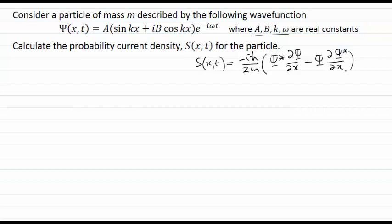So we're going to need to worry about the wave function, its complex conjugate, and the derivatives of both of those things. Let's make sure we know how to write down the complex conjugate of the wave function here, ψ*, that's something we're going to need, and we're going to go through our expression at the top to figure out what the complex conjugate happens to be.